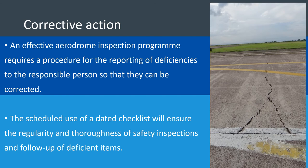The diligent use of a checklist will ensure the regularity and thoroughness of safety inspections and follow-up of deficient items. The conduct of inspections must end with an action for corrective action to be taken — remember to put your comments in. We'll now move on to the internal audit process.